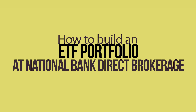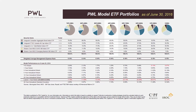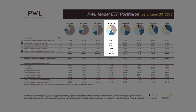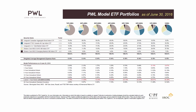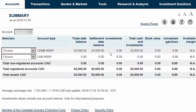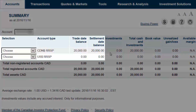Today's lesson is on how to build an ETF portfolio at National Bank Direct Brokerage. For our example, we'll be purchasing the 5 ETFs from my 40% fixed income, 60% equity model portfolio. Please feel free to download the model portfolios from my blog before getting started. After reviewing our account details, we find that there's $20,000 of cash available for investment within the Canadian Dollar RSP account.